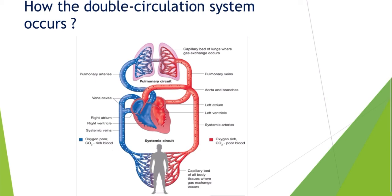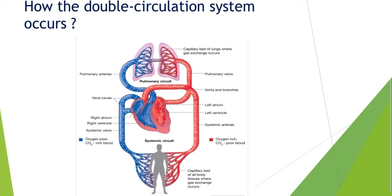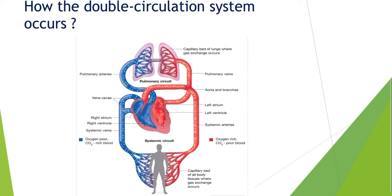Another system takes over at this point — a subsystem of the circulatory system known as the lymphatic system. We will discuss this concept later, but just note that there are systems that provide help to the circulatory system, which is why the lymphatic system is called a subsystem of the circulatory system.